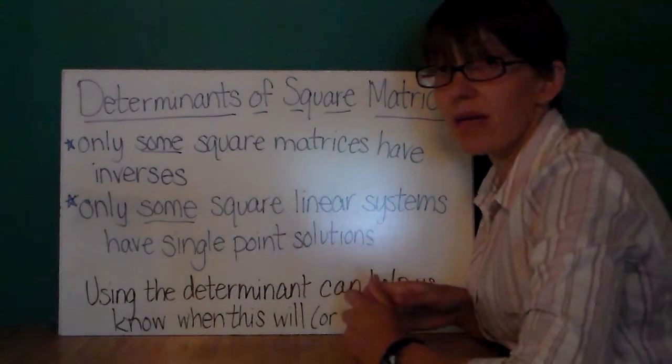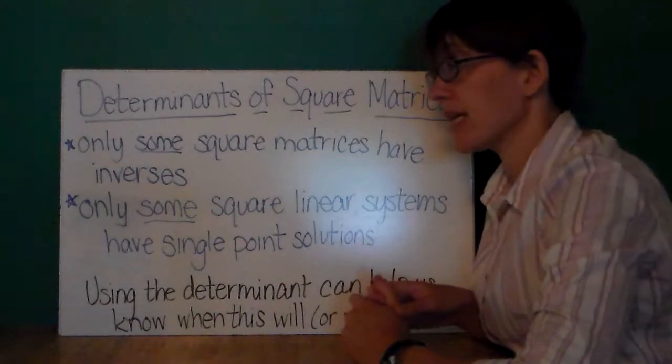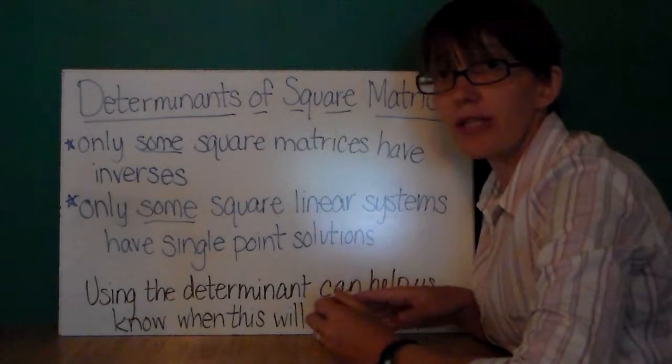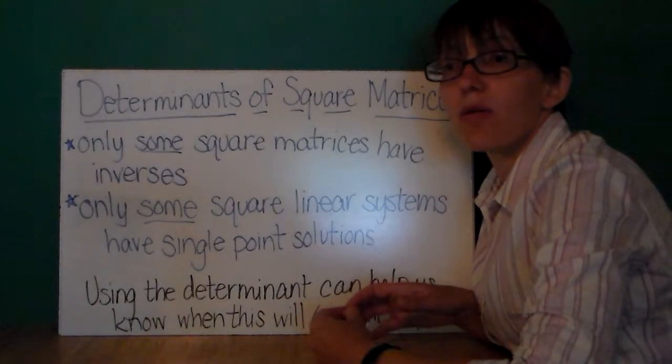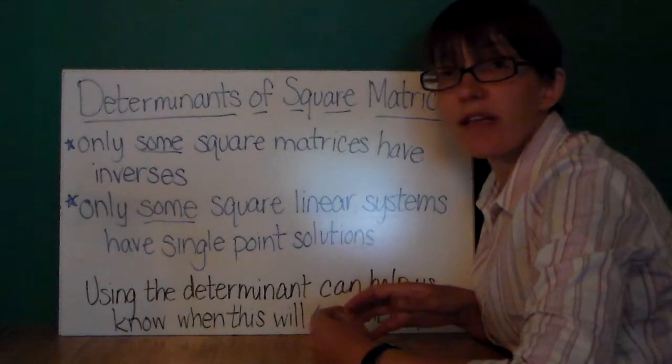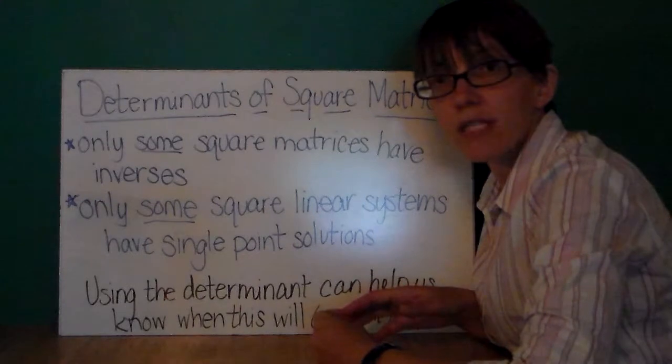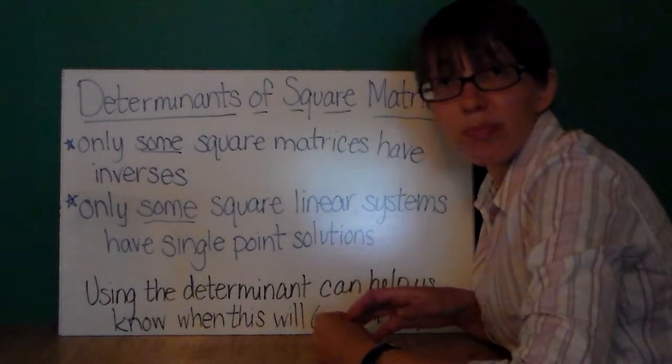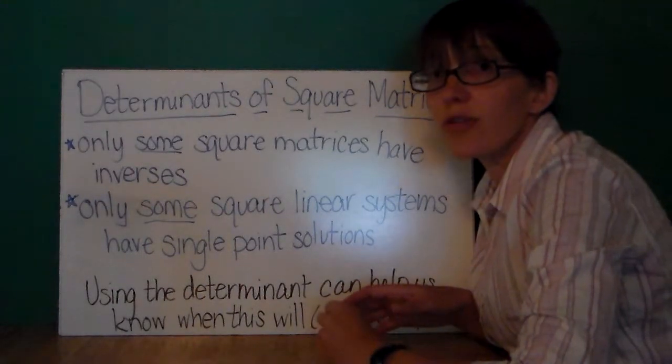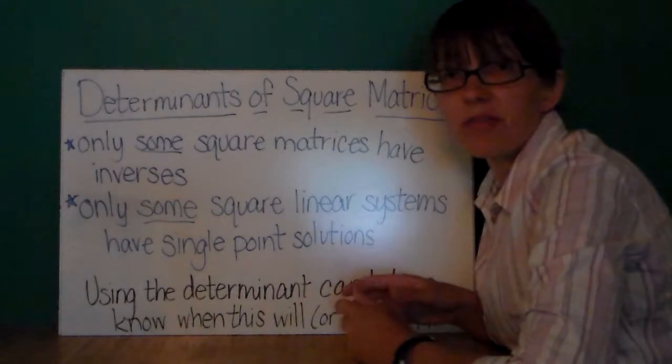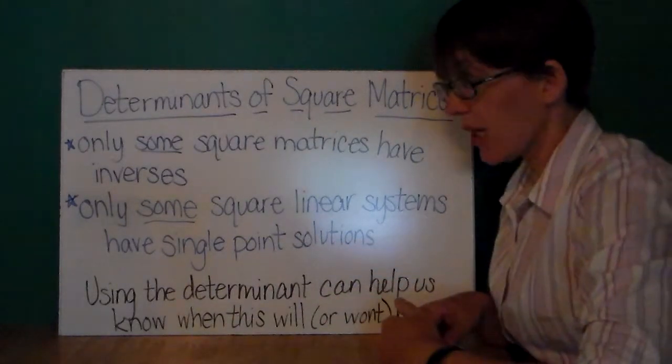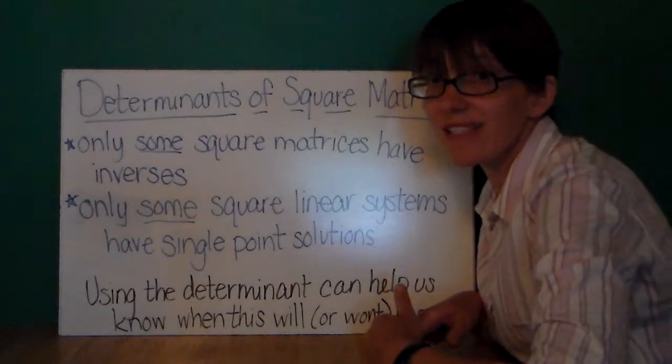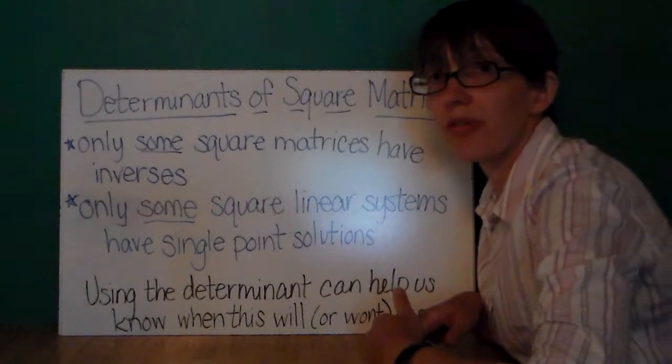Additionally, only some square linear systems have single-point solutions. Other linear systems may have solutions where there is an infinite number of points involved, three points involved, or they may have no solution at all. Using the determinant can help us to know when these conditions will or will not occur.